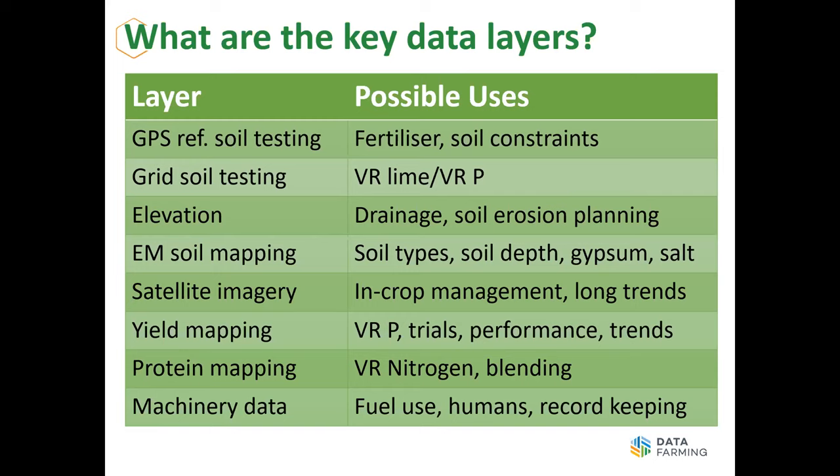Particularly important in the north is elevation mapping — that's either drainage planning on the flats or soil erosion on the slopes — where elevation data collected out of all your machines can be used for planning. EM soil mapping is another layer. EM's been around for decades but hasn't been widely accessible to the Australian farmer. We're setting about changing that with a number of machines through the country. It's really good for picking up soil types, particularly clay content, soil depth, and where you want to look for salt and sodicity problems — where you want to apply gypsum.